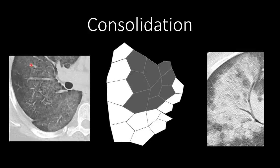Ground glass opacity compared to consolidation: notice you can see the vessels within the ground glass opacities and there are no air bronchograms, which distinguishes it from consolidation.